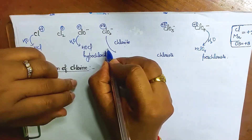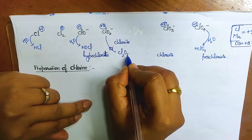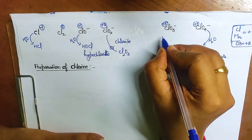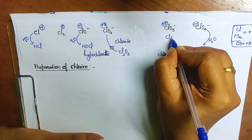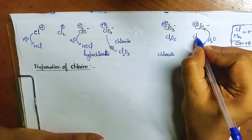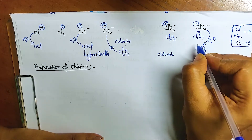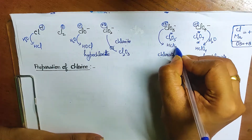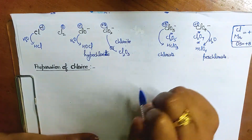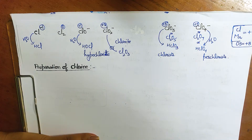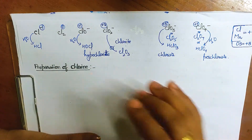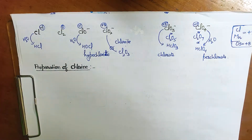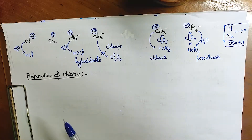These chlorine compounds can also exist as oxides: Cl2O (for +1), Cl2O3 (for +3), Cl2O5 (for +5), and Cl2O7 (for +7). Hydrolyzing Cl2O5 gives HClO3 where the oxidation state is +5. We will study these compounds in detail later.